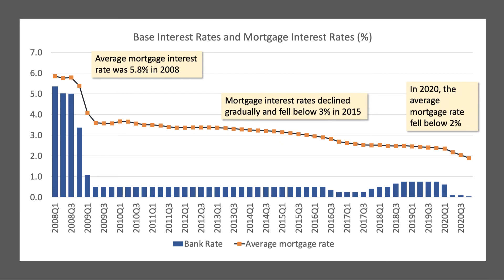That's higher than the base rate clearly — it's a secured loan — but mortgage rates in many ways have never been cheaper in nominal terms. You're paying just 2% on average if you can get a mortgage.